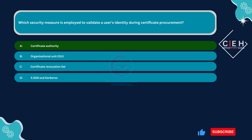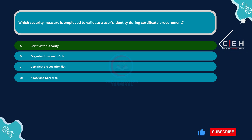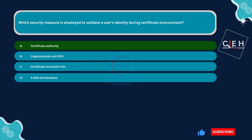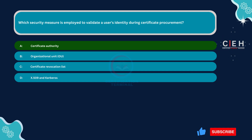The correct answer is Option A: certificate authority. Certificate authorities, CAs, are responsible for verifying the identity of entities requesting certificates. They validate the information provided by the entity against trusted sources before issuing the certificate. This validation process ensures that the entity's identity is legitimate and can be trusted within the context of the certificate's purpose.